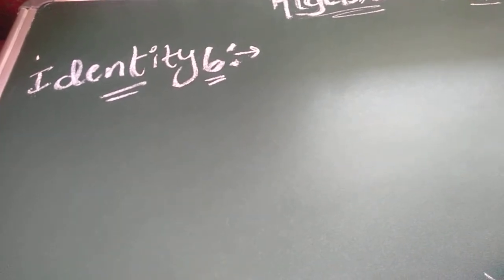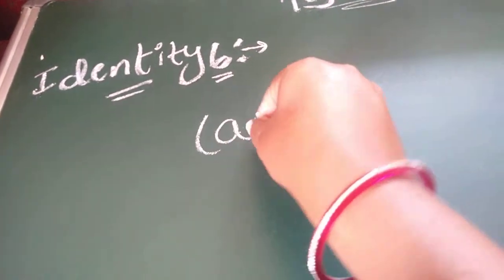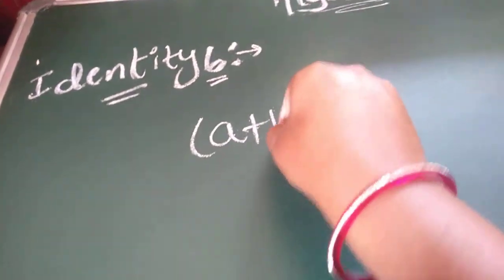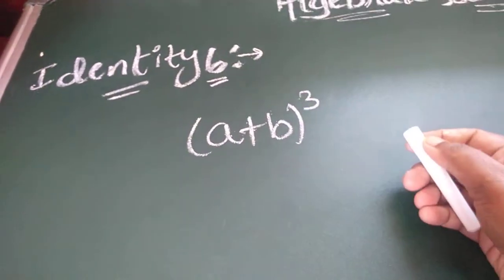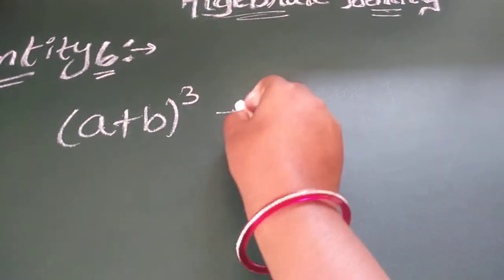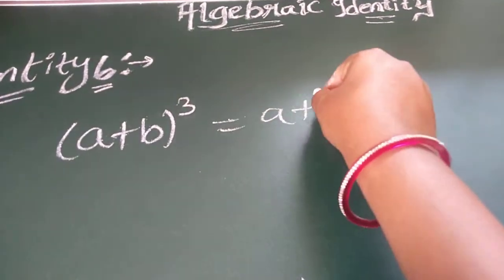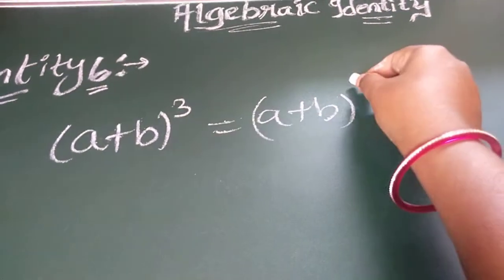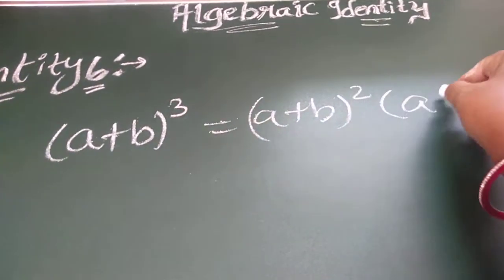Up to now we have learnt identities about the squares. Now let us learn an identity about the cubes — that is a plus b whole cube. I will write this whole cube as a plus b whole square into a plus b.